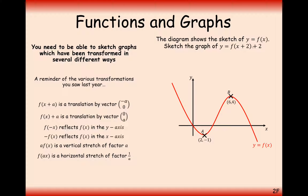Now we have f(x+2) plus 2. In this case we have two different transformations that affect different coordinates — this transformation affects the x-coordinates, and this transformation affects the y-coordinates. It doesn't matter which one we do first. Let's do the x-transformation first: we're going to move it left by 2, because inside is inverse. So we move from x=2 to x=0, and from x=6 to x=4. Now we do the y-transformation — moving up 2. The y-coordinate of minus 1 moves up to 1, and the y-coordinate of 4 moves up to 6. Then we sketch through those two points.